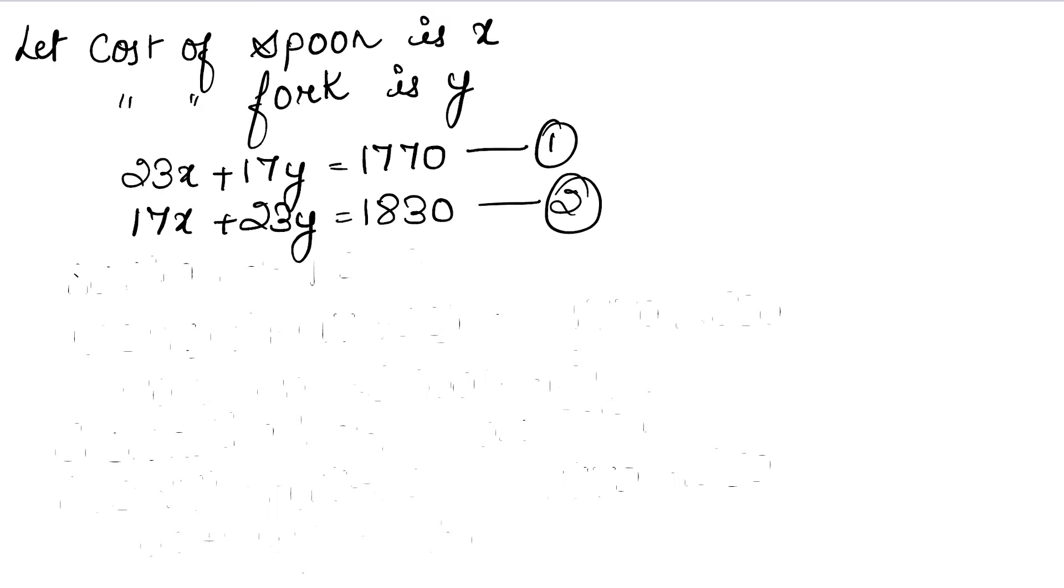Now we have the same rule that no coefficient is equal to one. So I multiply equation 1 by 17 and equation 2 by 23. You can apply other methods as well that we have seen in 3C. No problem. But I have done it here. Now check, I have done the calculation here.